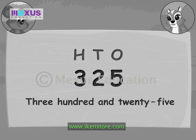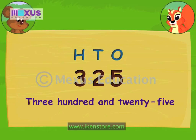Notice the sign between 20 and 5. It is called a hyphen. It is used for writing the names of numbers that are joined, like 25.